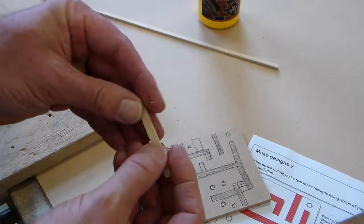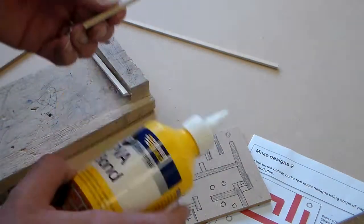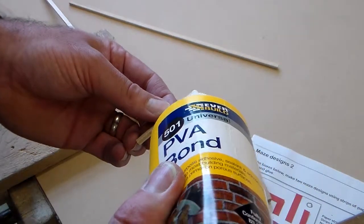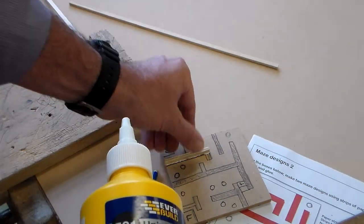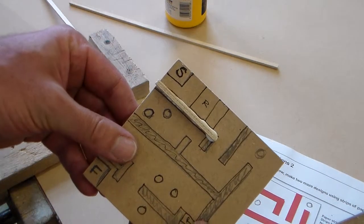We might need to clean that up with a piece of abrasive paper first and then we can carefully take our PVA glue, small piece of PVA glue and set that onto our maze.